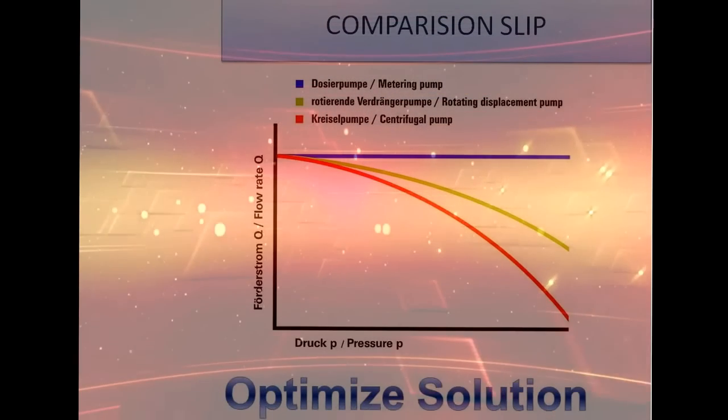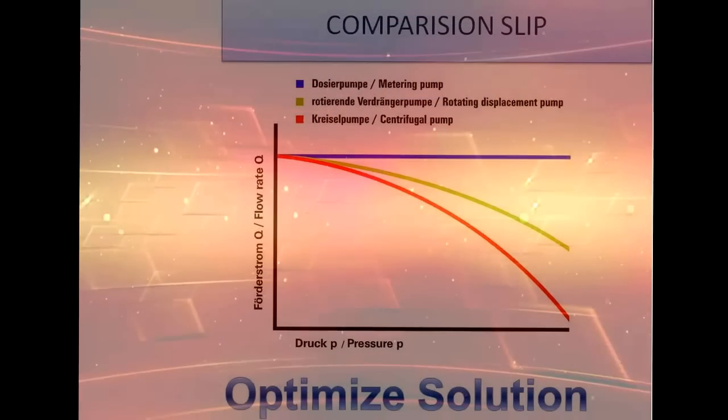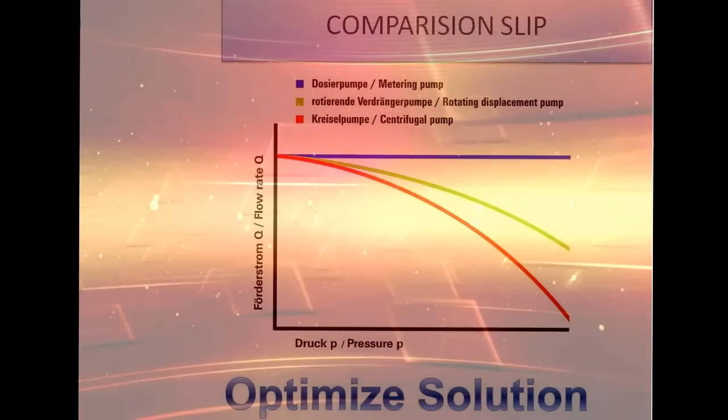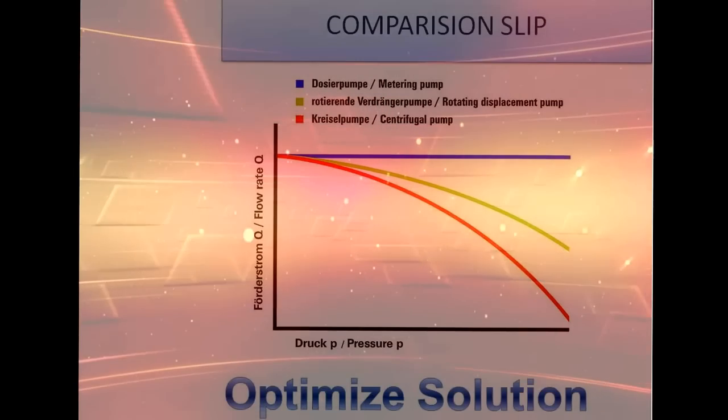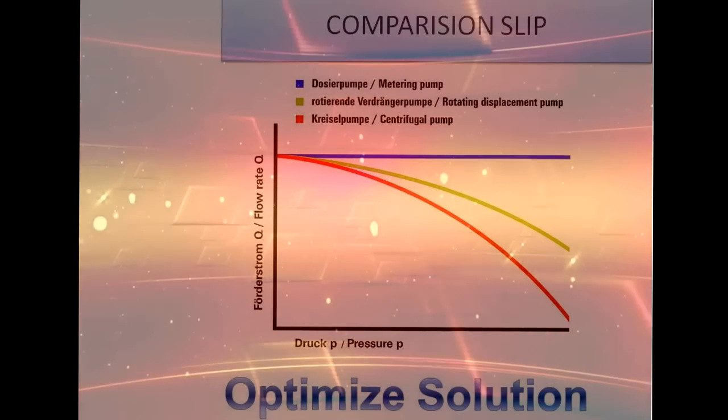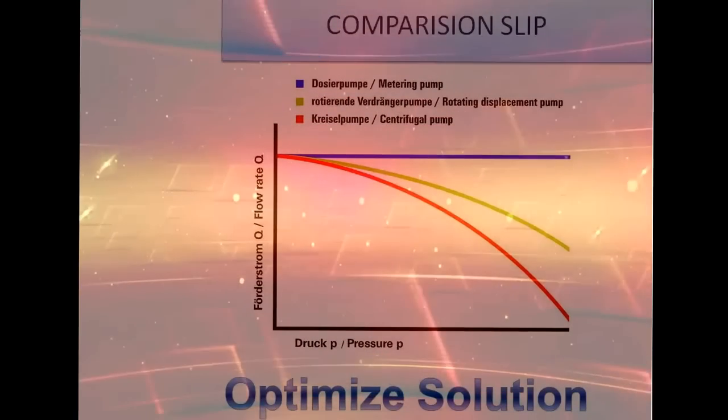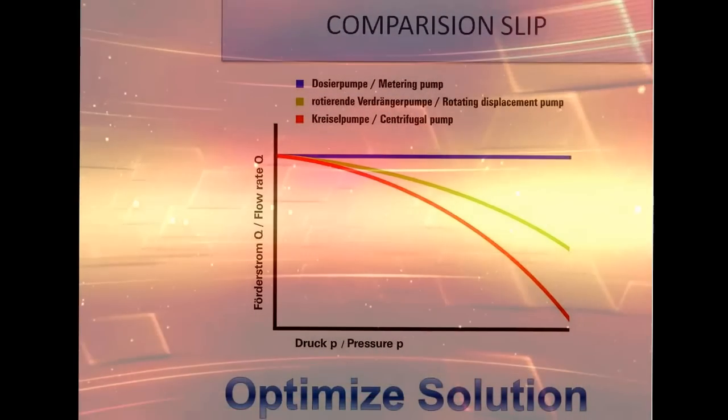This movement of liquid is called slip. The more the differential pressure, the more is the slip — that is the tendency of liquid in a rotary pump to move towards the suction side.